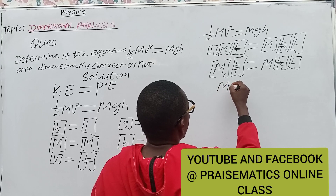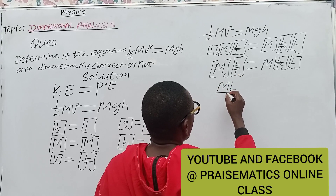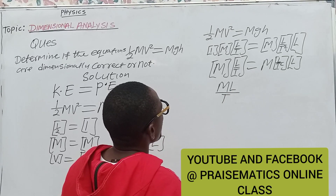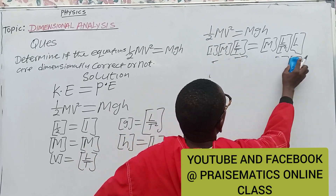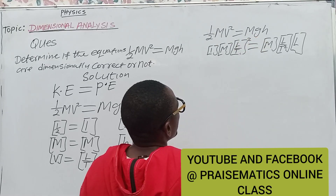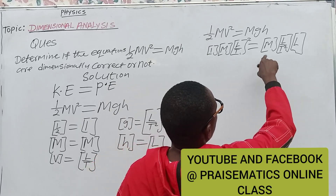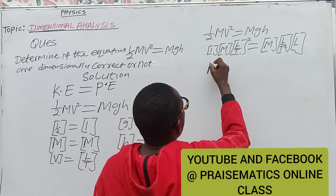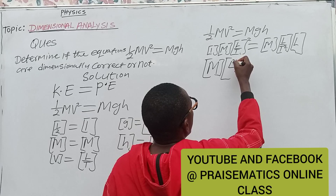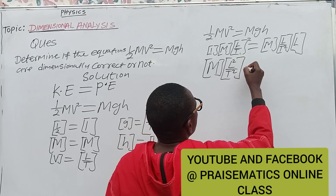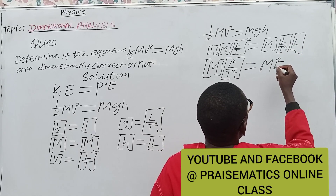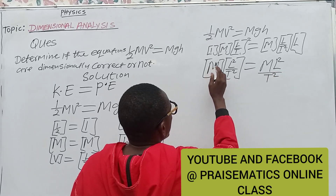So we are checking this side against this side. The left side: mass × (L/T). Remember, velocity is squared, so we have to expand it. So we have mass × L²/T². The right side: mass × (L/T²) × L, which gives us mass × L²/T².